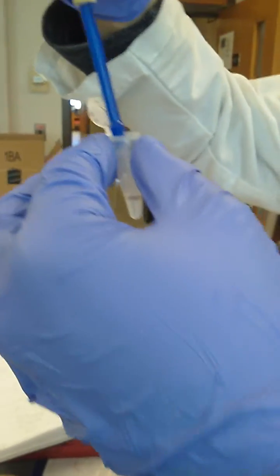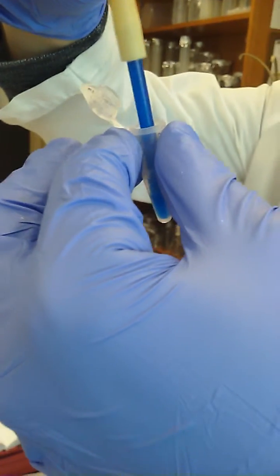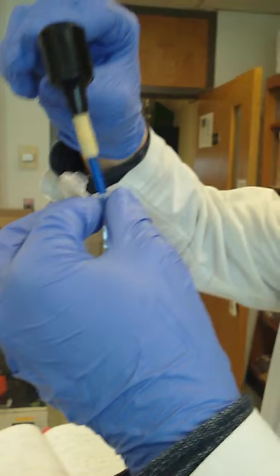Here we go. Frozen retina being homogenized in lysis buffer for RNA. The only real trick is to keep the pestle moving up and down, because sometimes the tissue gets trapped in the bottom of the tube and just homogenize.